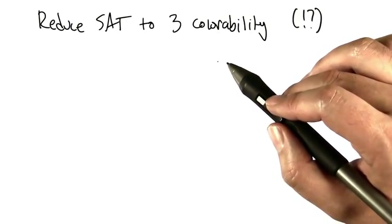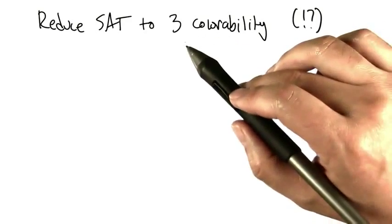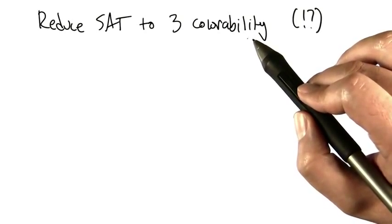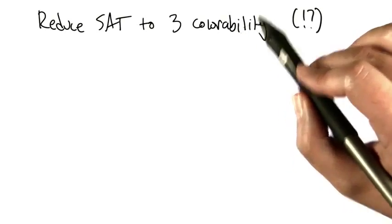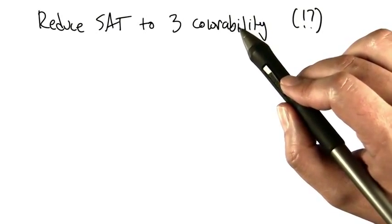Now what we're going to do is the other direction to show that 3-colorability is NP-hard. We know it's in NP but is it NP-hard? If it's NP-hard, it must be NP-complete because it's in NP.